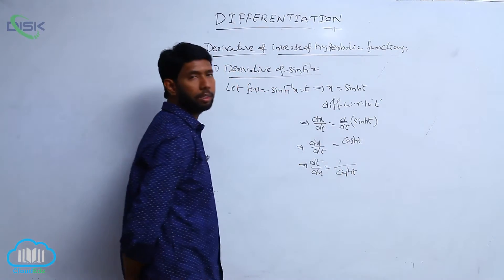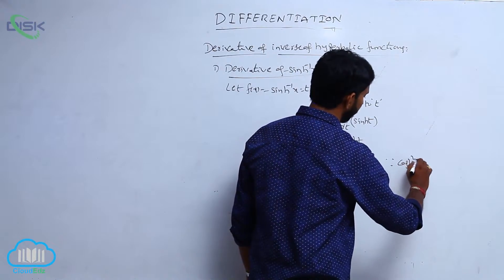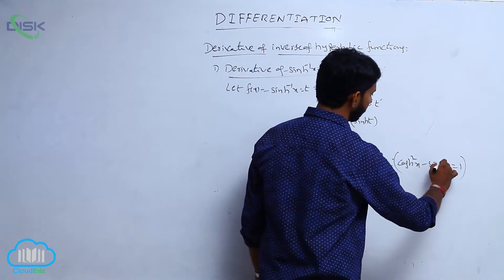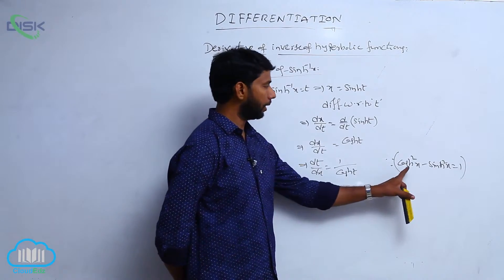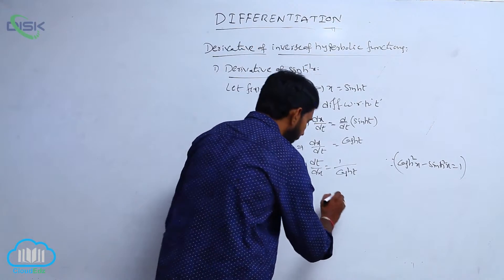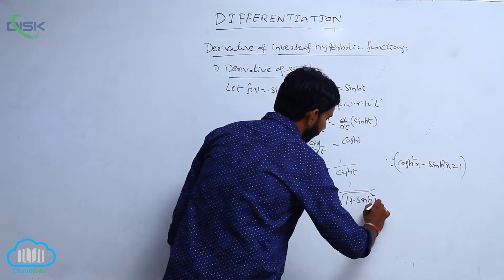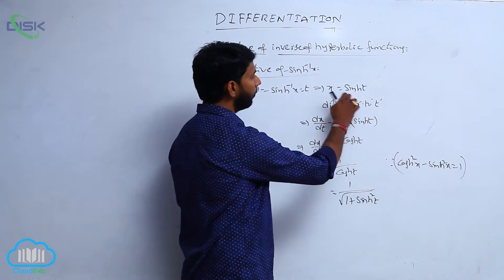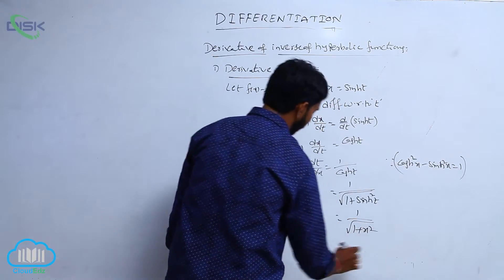In hyperbolic functions, the relation between sinh x and cosh x is: cosh square x minus sinh square x is equal to 1. So cosh square x can be written as 1 plus sinh square x, and cosh x is square root of 1 plus sinh square x, giving 1 by square root of 1 plus sinh square t. Here sinh t equals x, so this becomes 1 by root of 1 plus x square.